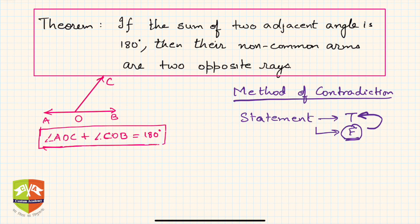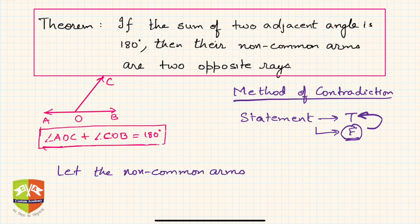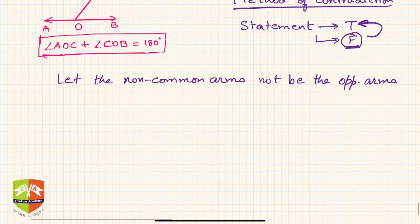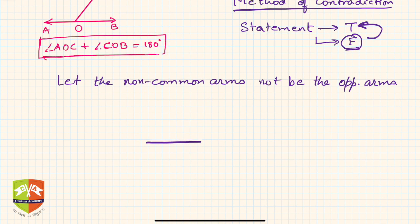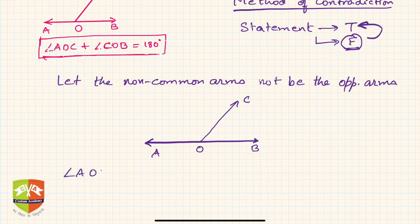So here, we need to prove that if the sum of adjacent angles is 180 degrees then their non-common arms are two opposite rays. We will start with the assertion that let the non-common arms not be opposite rays. Let's set up the diagram again with points O, A, B, and C. It is given that angle AOC plus angle COB equals 180 degrees.